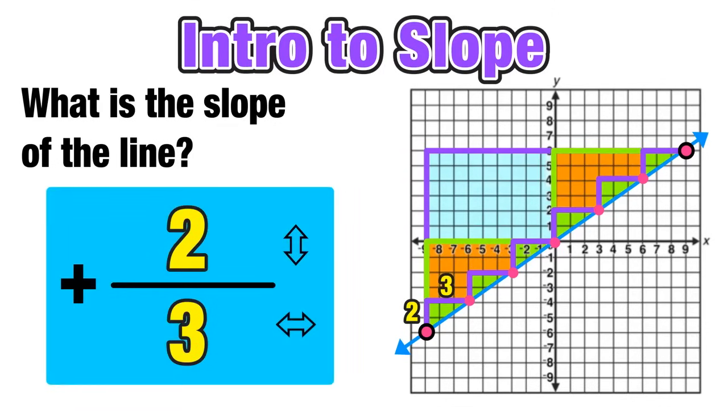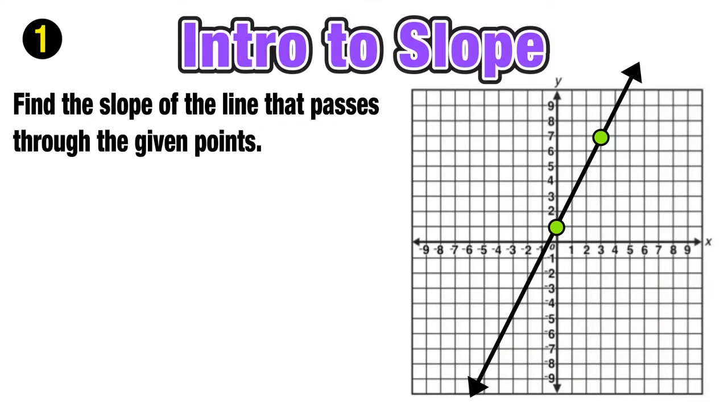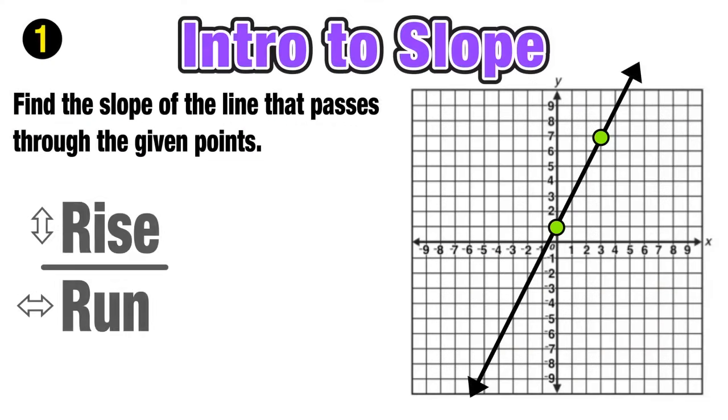Now again, that doesn't mean that the other two slopes, the 12 over 18 and the 6 over 9, were incorrect - they just weren't in reduced form. But all three of the slopes that we looked at will take you from one point on the line to another point on the line. So here's our first example: we want to find the slope of the line that passes through the given points that are shown on the graph here.